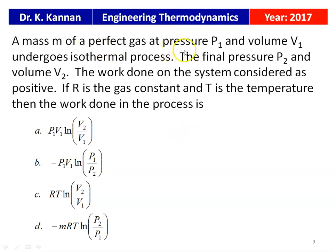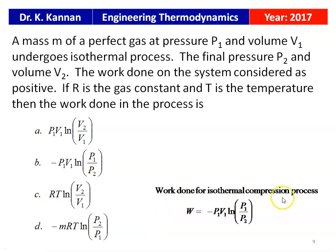A mass m of a perfect gas at pressure P1 and volume V1 undergoes an isothermal process. The final state is P2 and V2. Work done on the system is considered positive (note the change in sign convention — normally work done by the system is positive). If R is the gas constant and T is the temperature, for the isothermal compression process the work done equals −P1V1 ln(P1/P2). The answer is option B.